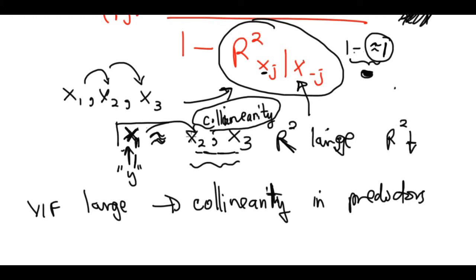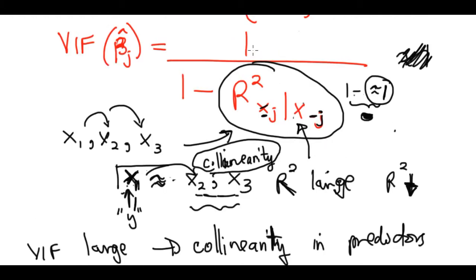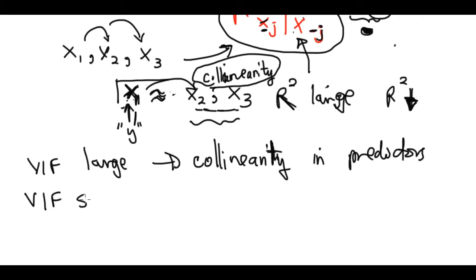Conversely, if there is no collinearity, regressing x1 on x2 and x3 results in a low R-squared because there is no relationship. A low R-squared — say 0.1 — gives one minus 0.1 in the denominator and one divided by 0.9, producing a small VIF. A small VIF means there is no collinearity.